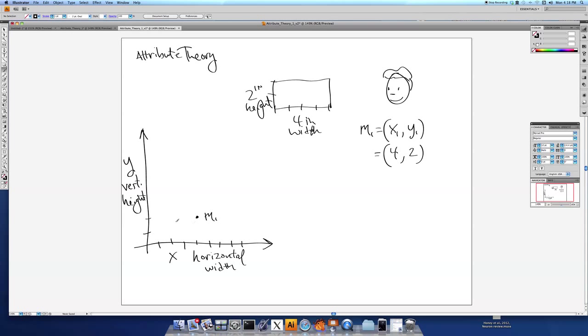So 4, 2 would be a point right here on this Cartesian plane. So M1 can be summarized as a point. And we can draw it as a vector if we construct a line coming from the origin out to this point. So now we have a vector M1 which represents this rectangle M1 because that's our first memory that we want to think about for this memory experiment where this person is looking at rectangles.